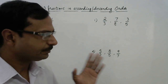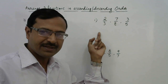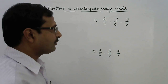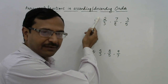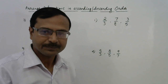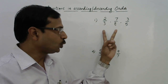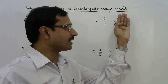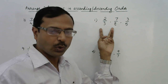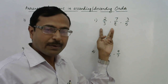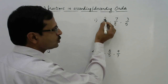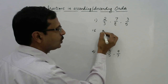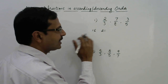Let's see the first question: 2/3, 7/8, and 3/5. We have to multiply the numerator of one fraction with the denominator of the other. First, compare only the first two fractions — forget the last one for now. So we get 2 × 8 = 16, and 7 × 3 = 21. We know 21 is greater than 16.